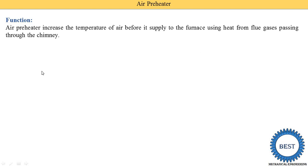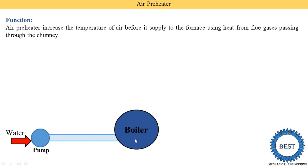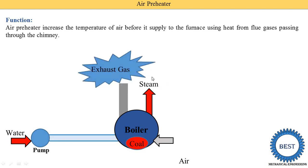This heat energy is recovered by using the air preheater. Looking at the diagram: water first comes to the pump, then it is supplied to the boiler. To heat the water we would install an economizer, but here we are studying air preheaters. Air is supplied to the boiler, so we install an air preheater here. If we need to heat the steam, we install a superheater. The exhaust gas would otherwise go to waste to the atmosphere.